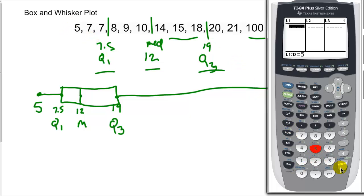So I have 5, two 7s, 8, 9, 10, 14, 15, 18, 20, 21, and 100. And you'll notice the nice thing about it is it checks to see how many numbers you've plugged in. So I've got 12 numbers plugged in right now.